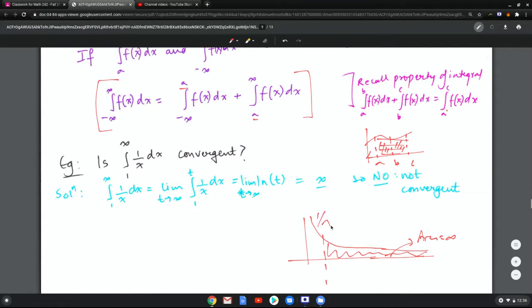For 1 over x, but if you take 1 over x squared which is slightly more steep, then this area is only one. Big difference between 1 and infinity there, right?